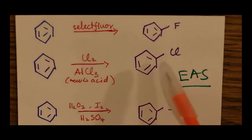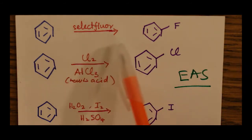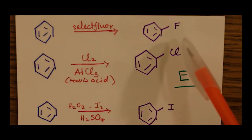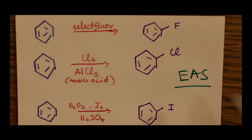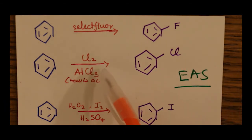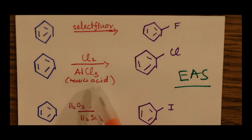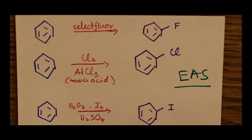These take place in the presence of different reagents. In the case of fluorine, we have Selectfluor. In the case of chlorine, we have Cl2 and aluminum chloride, which is also a Lewis acid. And for iodine, which is called iodination, we have peroxide, iodine, and H2SO4.